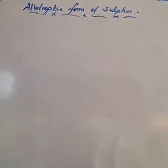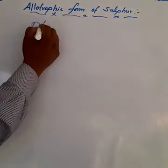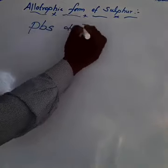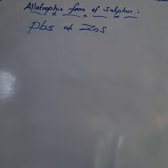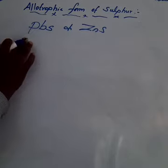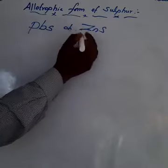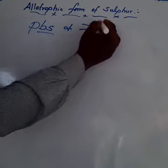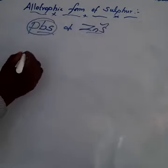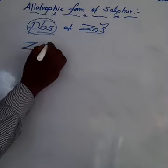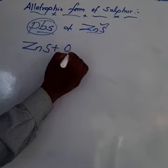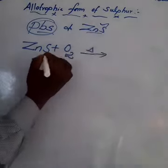From sulfide ores: zinc blende (ZnS) undergoes roasting with air to give zinc oxide and sulfur dioxide. The formula of Galena is PbS. The roasting of ZnS: 2ZnS + 3O2 → 2ZnO + 2SO2.